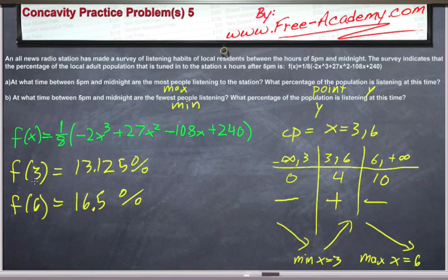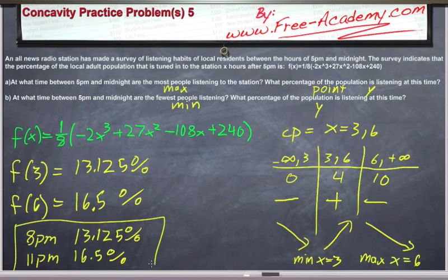This is hours after midnight, or hours after 5pm, so three hours after 5pm is 8pm, where we have a minimum with only thirteen-point-one-two-five percent of local adults listening. Then six hours after 5pm, we have a maximum with sixteen-point-five percent of local adults listening. So there we have it.